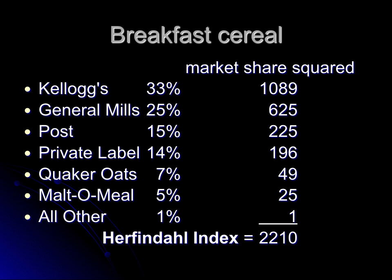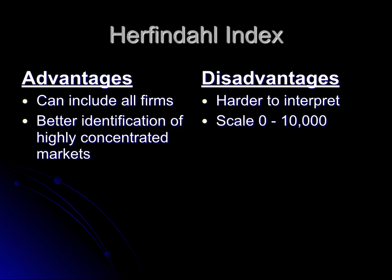The calculations are fairly straightforward, but the interpretation is a little more complicated because it's not a simple 0 to 100 scale. The scale runs from 0 to 10,000, where 10,000 represents a monopoly — 100 percent squared equals 10,000. We can look at some numbers roughly equivalent to the concentration ratios to help interpret the level of concentration using the Herfindahl Index.